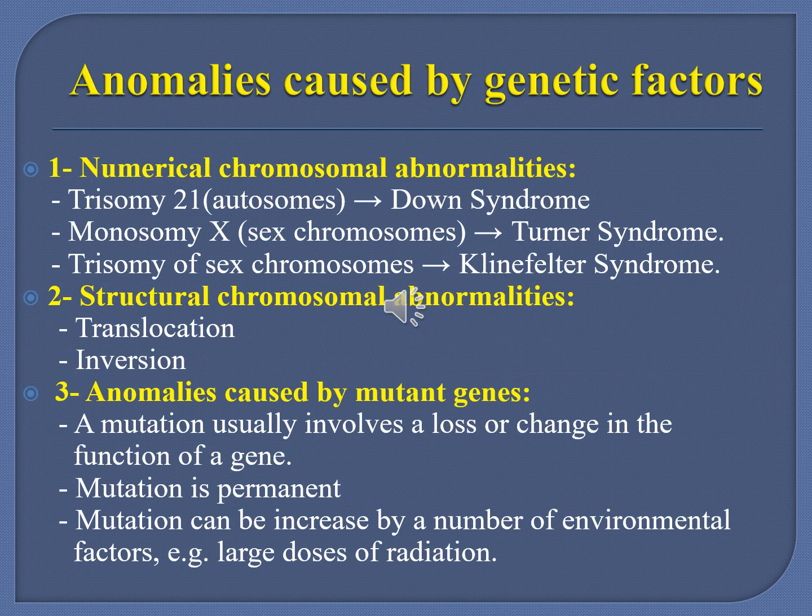Genetic abnormalities causing anomalies can be classified as numerical abnormalities of the chromosome, structural abnormalities, or mutant gene defects. Down syndrome involves trisomy 21 — an extra chromosome at number 21. Monosomy, the absence of one chromosome, is exemplified by Turner syndrome, where the female has 45,XO. In Klinefelter syndrome, the individual is XXY — a male with female characteristics.